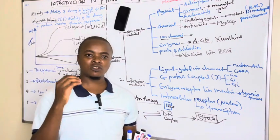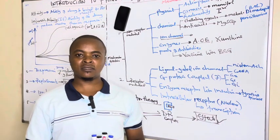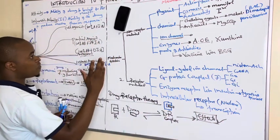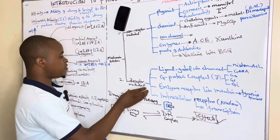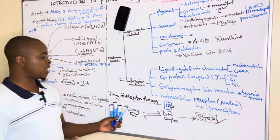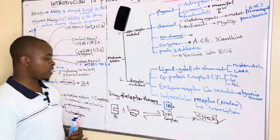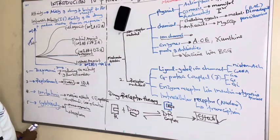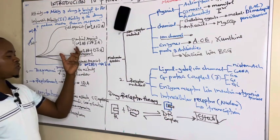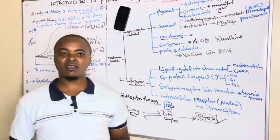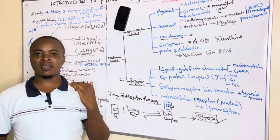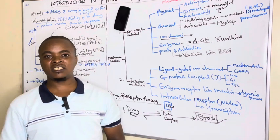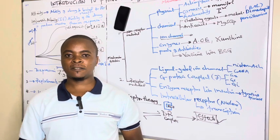So this is what we can discuss in this introduction to pharmacodynamics. We have looked at the principles, the mechanisms of action — both non-receptor mediated and receptor mediated — and we have ended with drug-receptor interaction, seeing how a drug can bind a receptor to form a complex which produces an effect. We have seen different types of drugs: full agonist, partial agonist, antagonist, and inverse agonist. Thank you so much for learning until the end — we are always at your service.